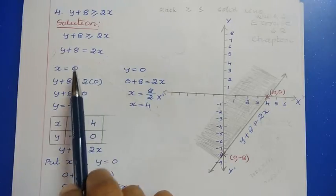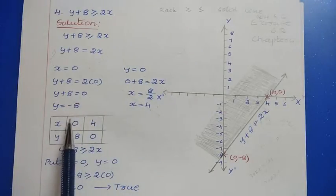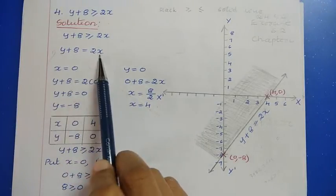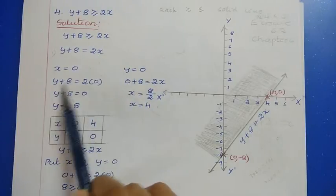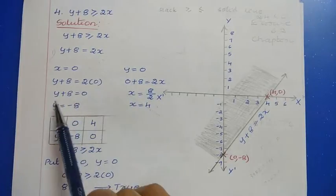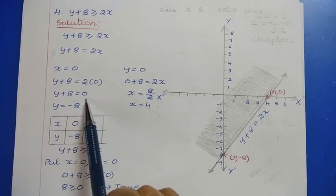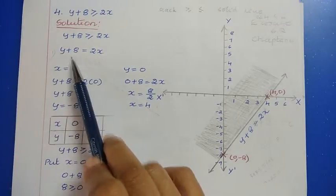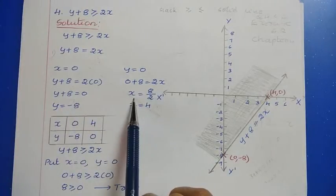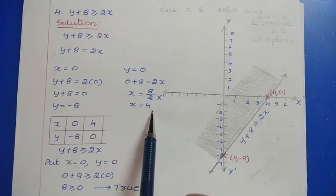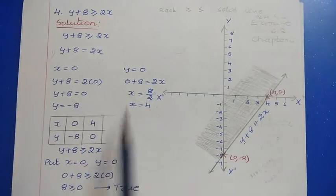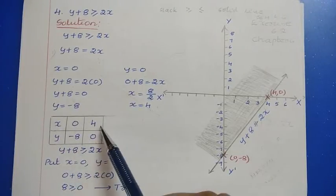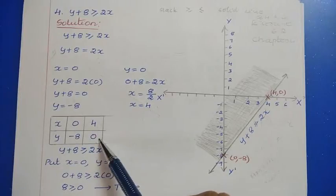To find the solution, take x equal to 0 and find the value of y, and put y equal to 0 and find the value of x. If x equals 0, then y plus 8 equals 0, so y equals minus 8. If y equals 0, then 8 equals 2x, so x equals 4. We got two points: (0, -8) and (4, 0).